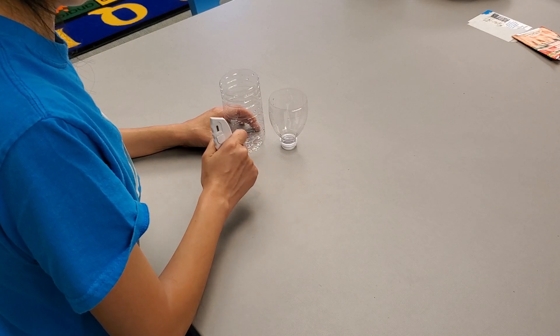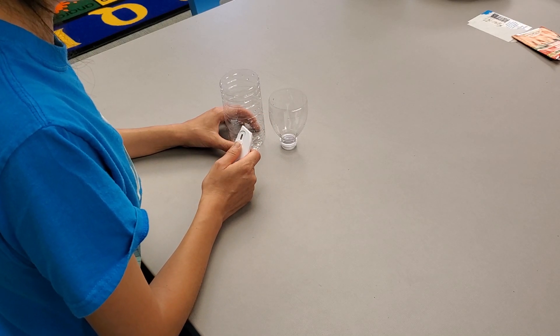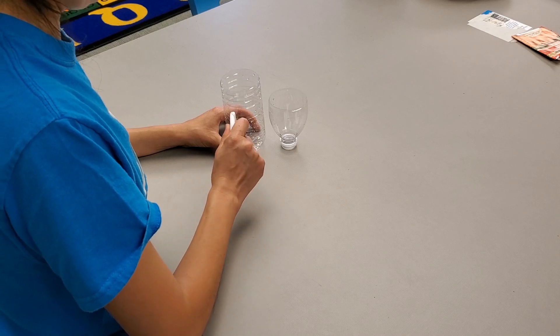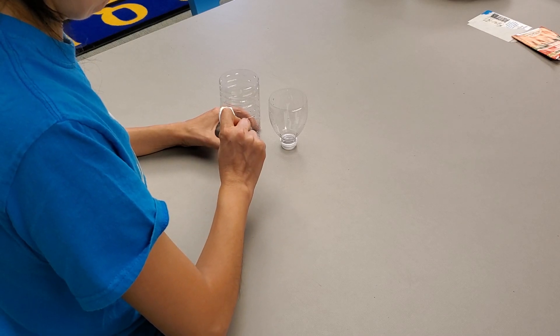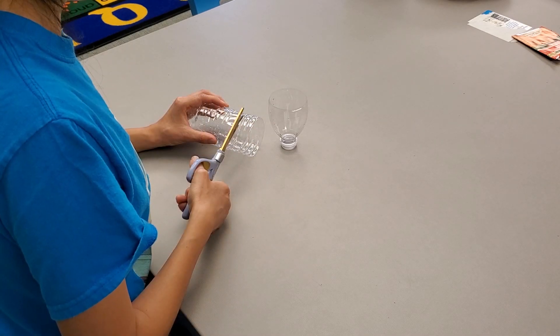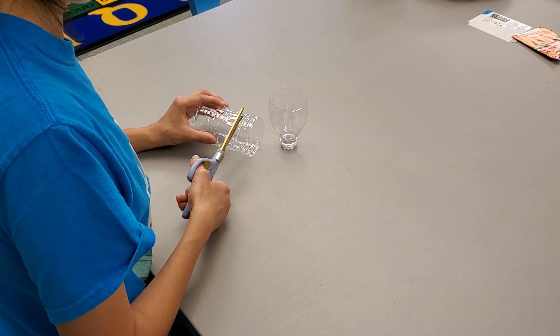For that we need the help of your parents again to start the starting hole. Now again you're going to need your scissors to cut through the bottle.